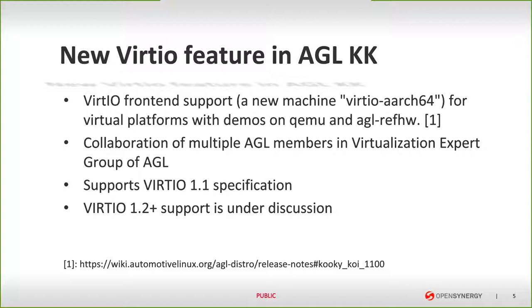Let's now look at the new VIRTIO feature in the AGL KK. You may have noticed that the release notes of AGL KK contain a statement that AGL now supports VIRTIO front-end — a new machine called VIRTIO ER64 that is intended to be run on virtual platforms — and demos are available on QEMU and AGL reference hardware. This is a result of collaboration of multiple AGL members in the expert group virtualization in AGL. VIRTIO in AGL KK supports VIRTIO 1.1 specifications, and the future specification version 1.2 and potential new devices are under discussion in the expert group. You're welcome to join.